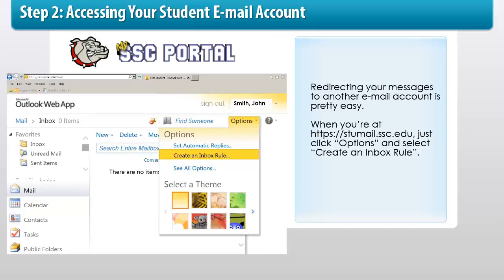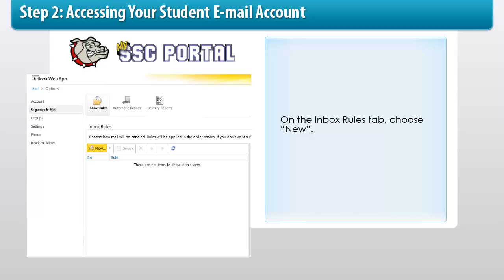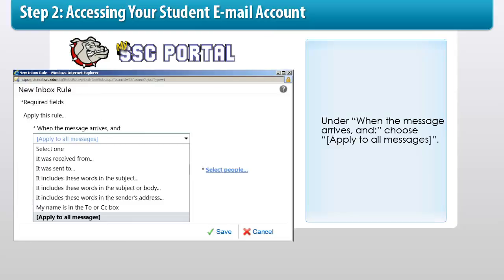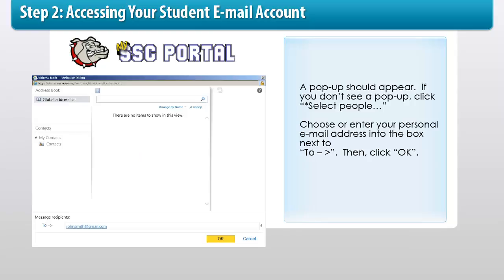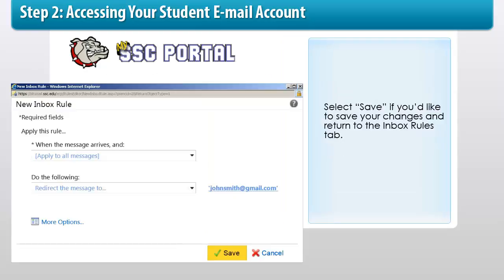Redirecting your messages to another email account is pretty easy. When you're at stumail.ssc.edu, just click Options and select Create an Inbox Rule. On the Inbox Rules tab, choose New. Under When the message arrives and, choose Apply to all messages. Under Do the following, select Redirect the message to. A pop-up should appear. If you don't see a pop-up, click Select People. Choose or enter your personal email address into the box next to To. Then click OK. Select Save if you'd like to save your changes and return to the Inbox Rules tab.